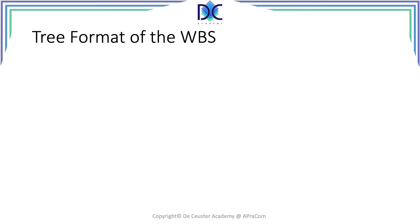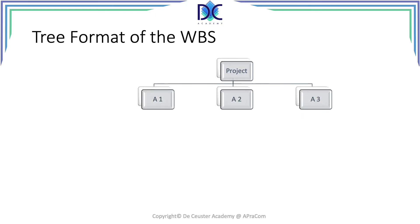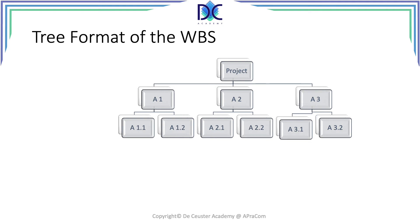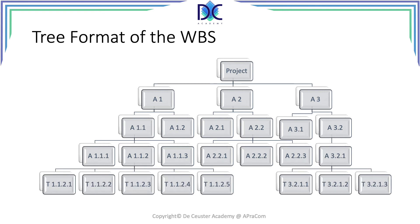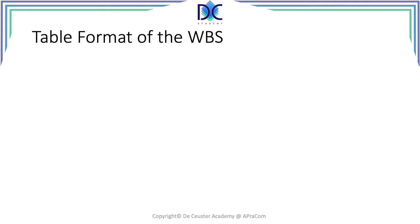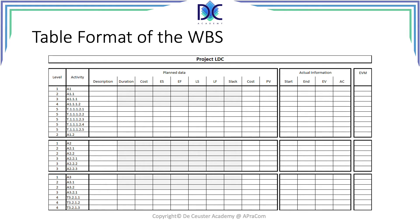When we look at the different formats of the WBS, the first format is the tree format. At the top level, or level zero, we have the project. We decompose into lower levels with more detail and more items, until we reach the lowest level — the work packages. Another format is the table format, like a spreadsheet, where we have all activities with more information, and it is typically linked to the Gantt chart in software.